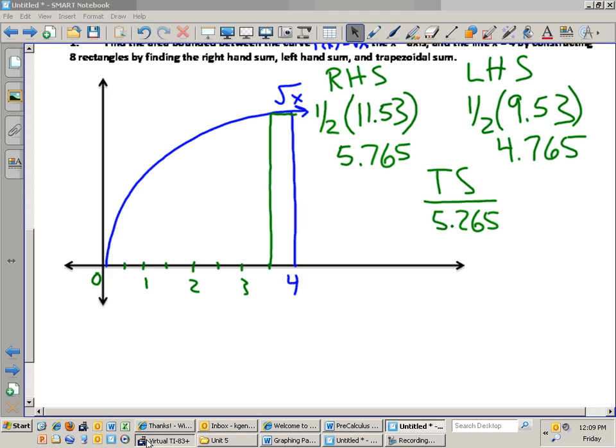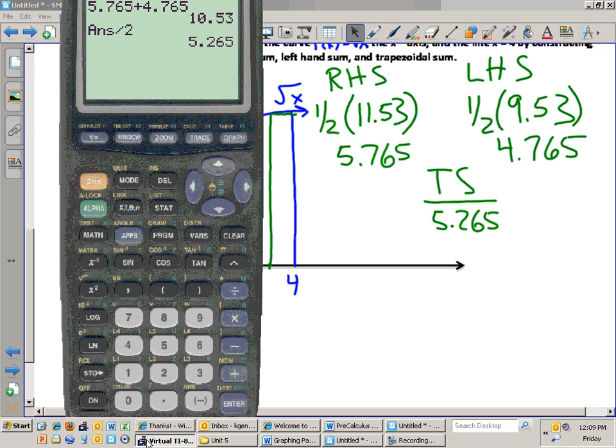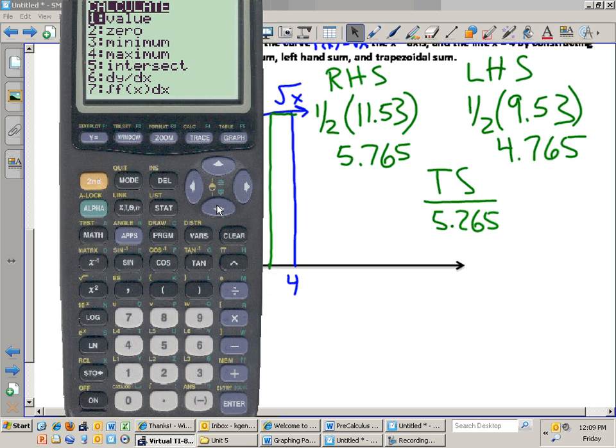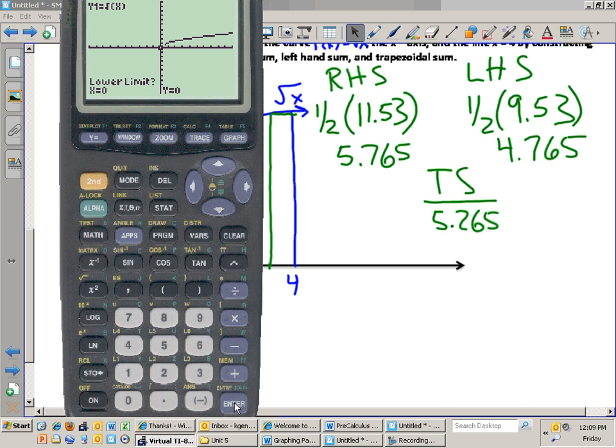To not give away the magic, we'll just go to the actual graph. The question was, how accurate is this? Well, if I go second calculate, some people realize that this integral piece right here does calculate the area exactly. Our lower limit is 0, our upper limit is 4, and that gives us an exact amount of 5.33.